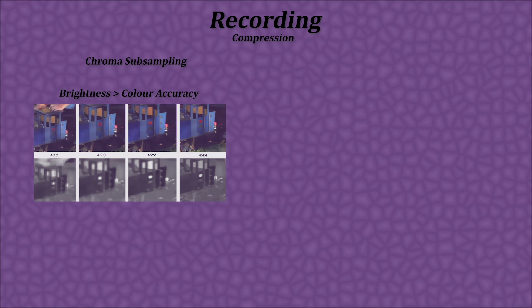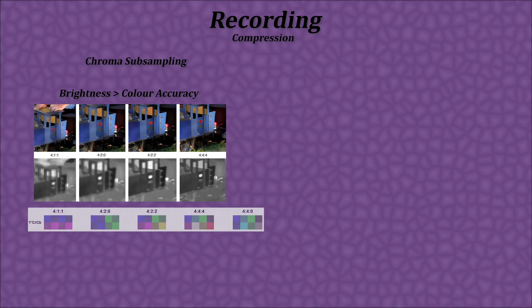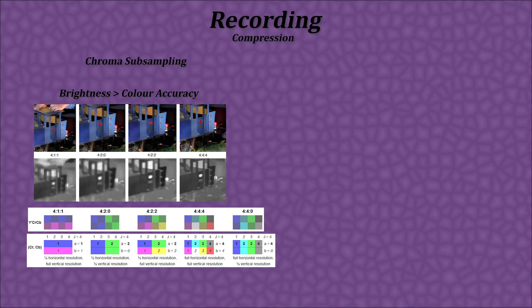So what is chroma subsampling? It reduces color information and accuracy in favor of luminance information and accuracy. Because human eyes are more sensitive to light than color, chroma subsampling takes the original raw data from a video and drops chroma data — the color — to preserve the luma data, or the brightness.